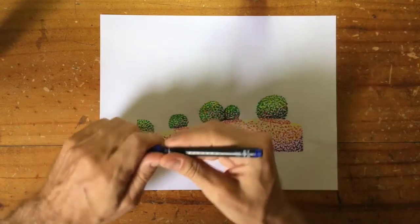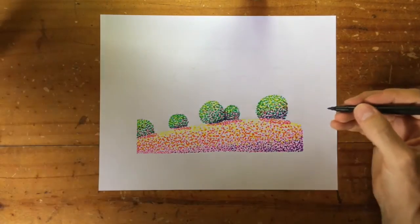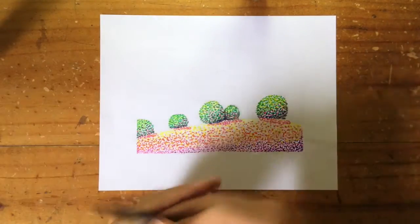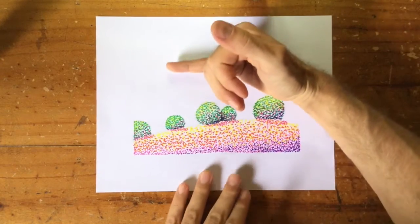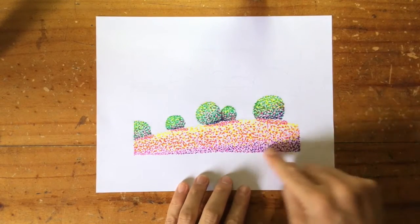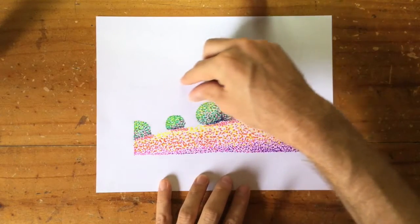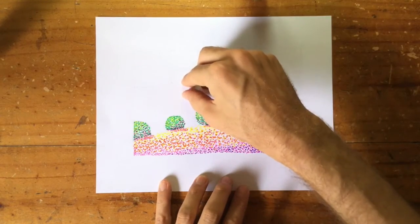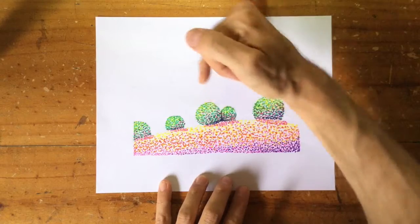So with this blue, we're going to start along the top of the mountain and work down and spread out like we did at first with the pink here. So we start quite compact along the top, but then spread out and make the dots further apart as we go down.